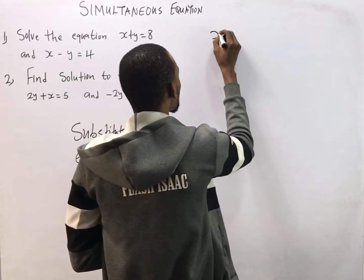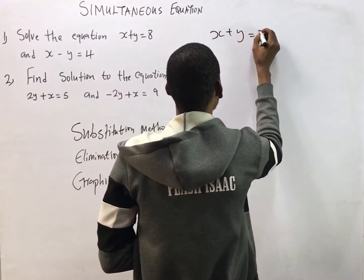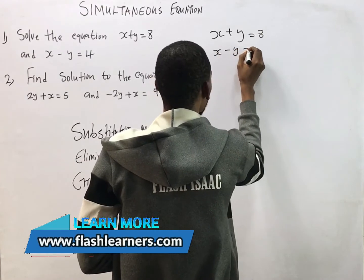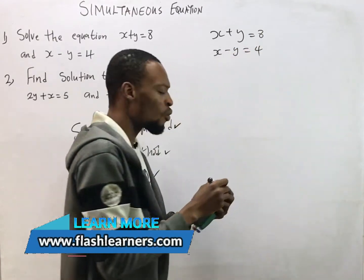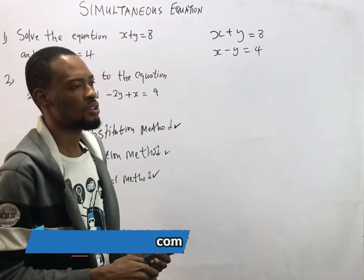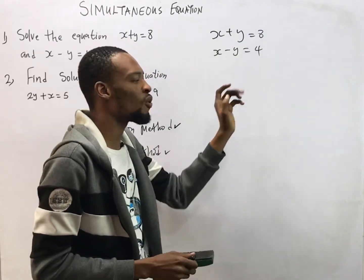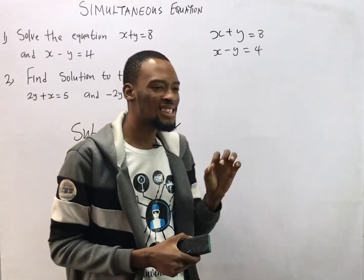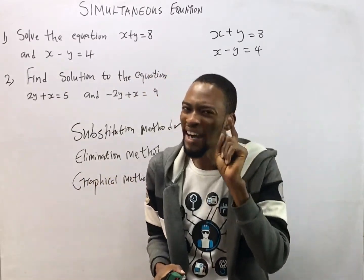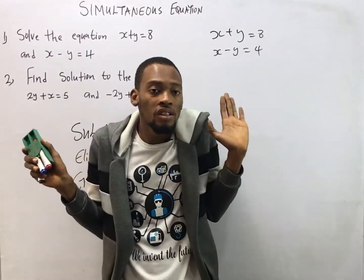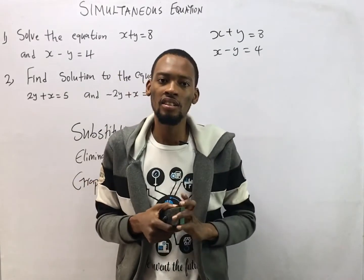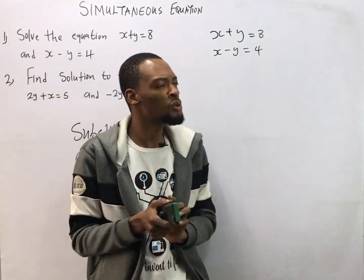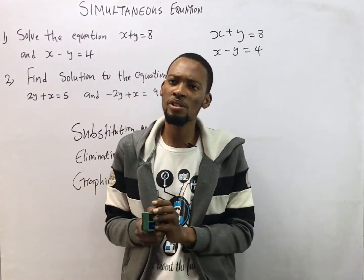For example, if I am given S plus Y equals 8 and S minus Y equals 4, we have two unknowns, which are S and Y. In the elimination method, we start by eliminating one of the unknowns to get the other, then we substitute. So how do you solve simultaneous equations using the elimination method?